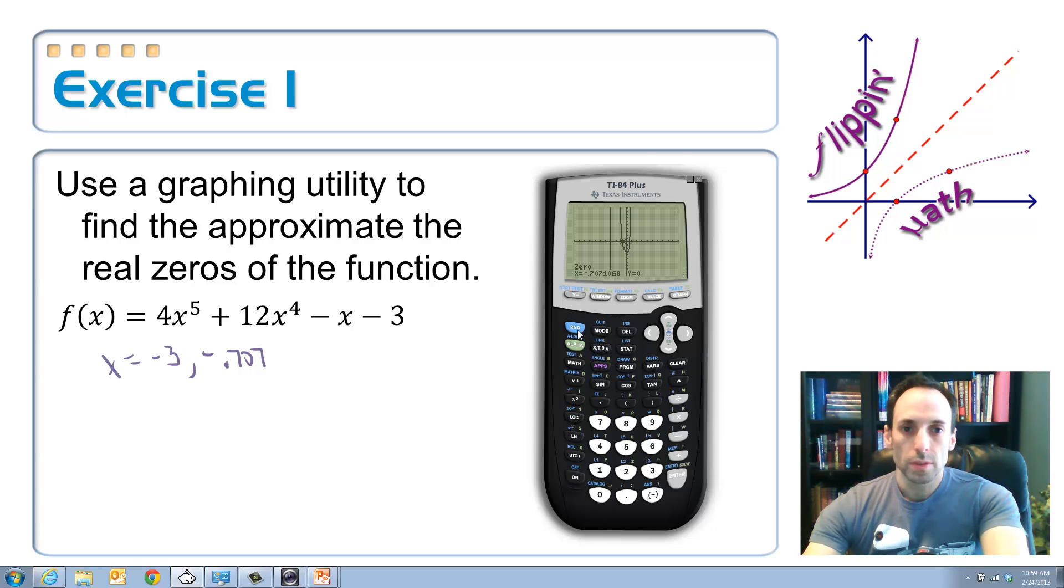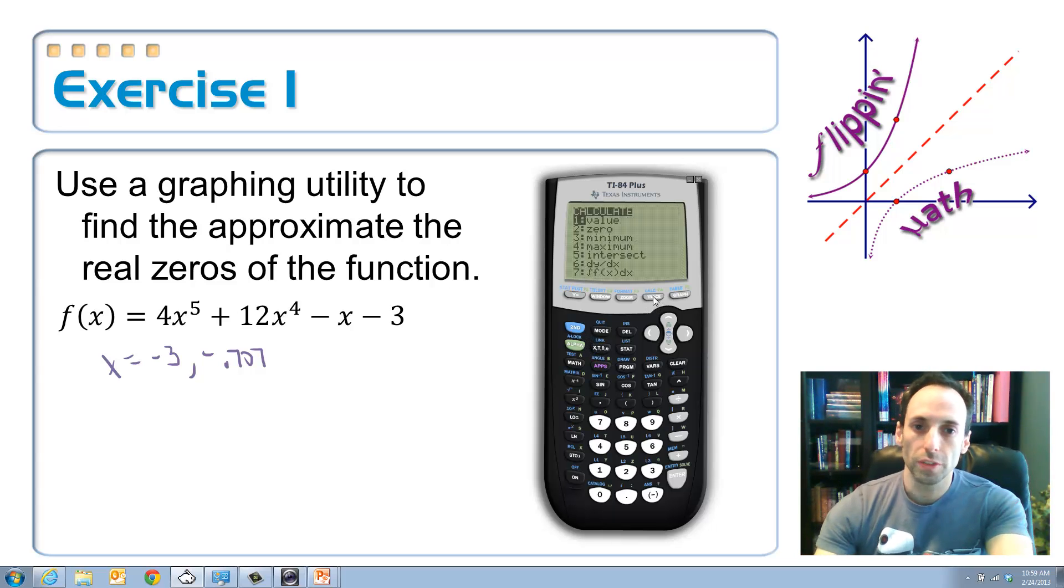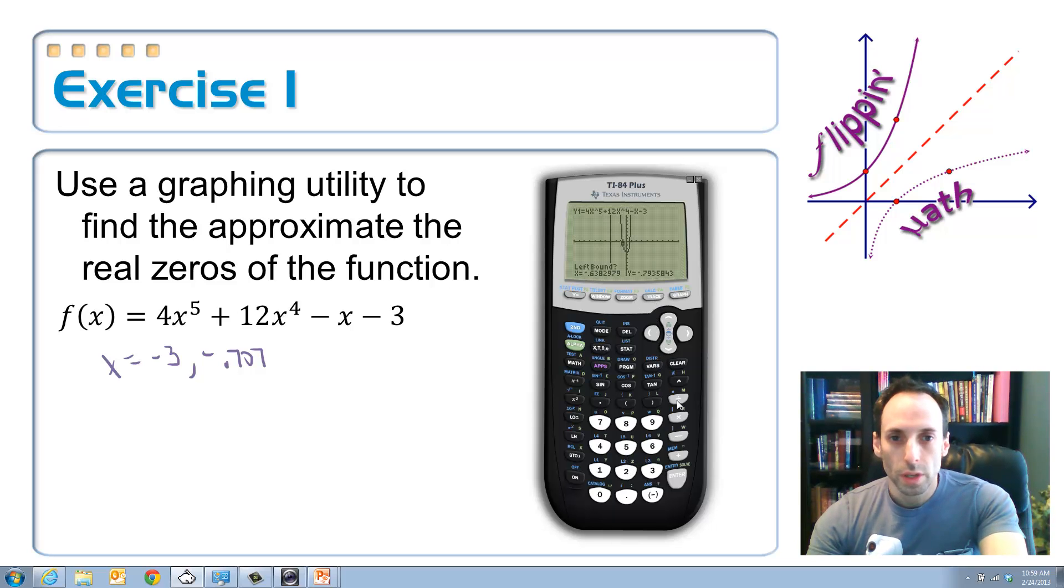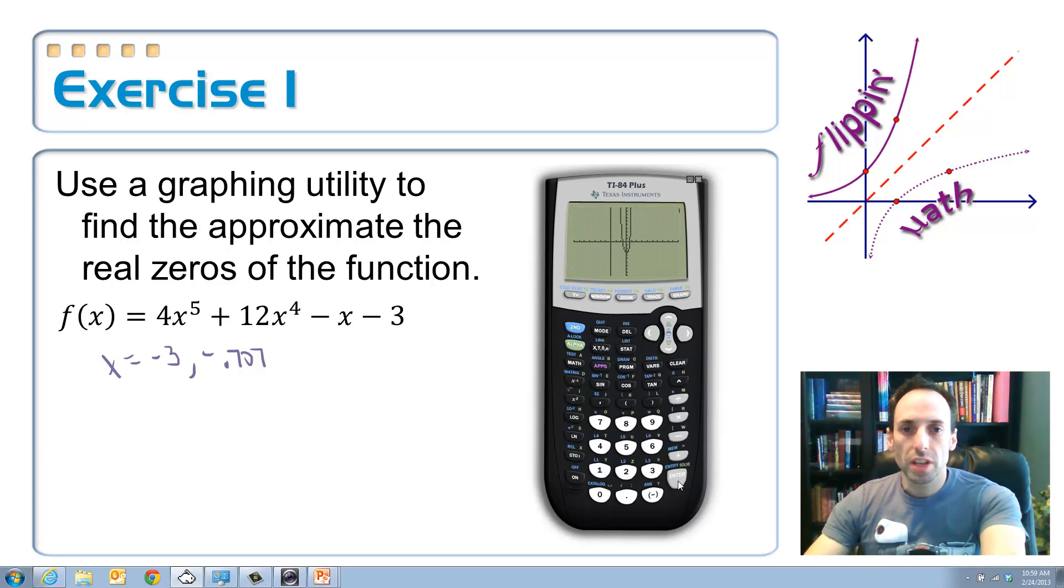So, what are the steps again? Second, trace for the calculate menu. We're going to choose number 2, zero. Now, this one's in between 0 and 1, so I could just type in 0. Hit enter. 1. Hit enter. And you can guess if you want to or just hit enter again.